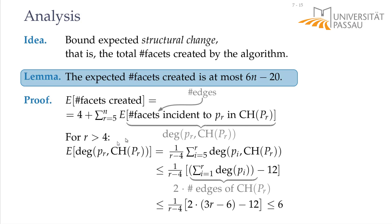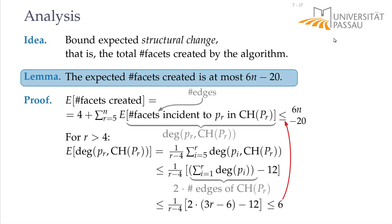So the average degree of these r minus 4 vertices is at most 6. Plugging this in, we sum from r equals 5 to n, each contributing at most 6. We have n minus 4 such steps, so 6 times n minus 4 is 6n minus 24, plus 4 for the initial facets gives 6n minus 20. The expected total number of facets created is at most 6n minus 20.